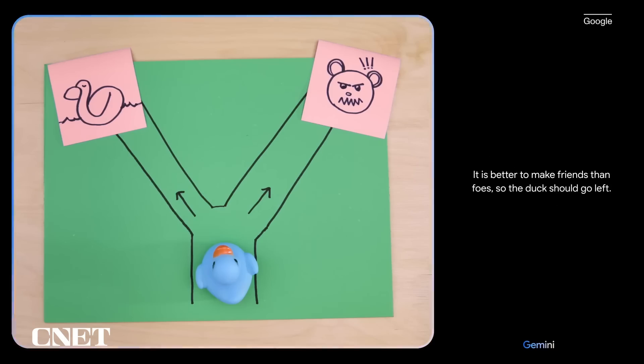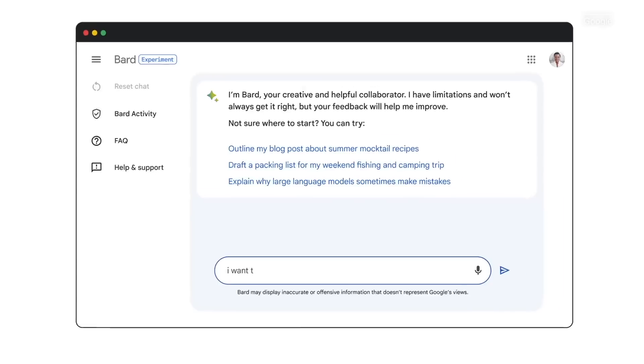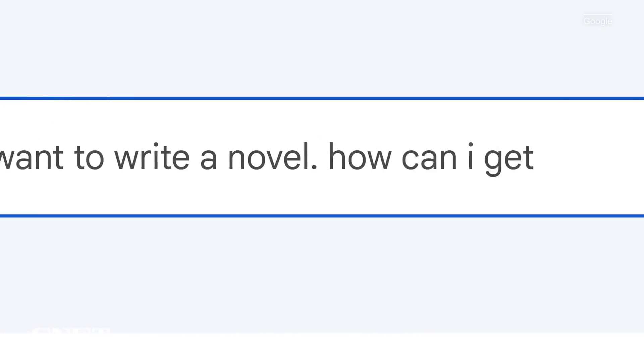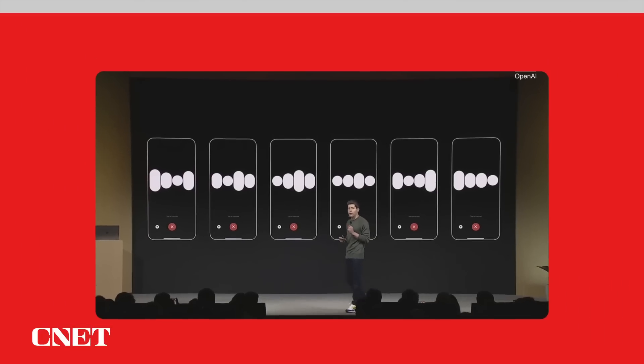Today Google announced Gemini, which is a new foundation for its most advanced AI, including its Bard AI chatbot. Gemini is the third major update to its AI technology in less than a year, so the company is pushing really hard to try to catch up to its biggest rival here, which is OpenAI, the creator of ChatGPT.